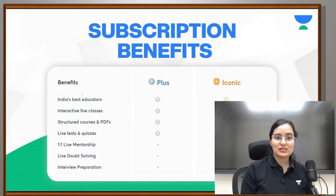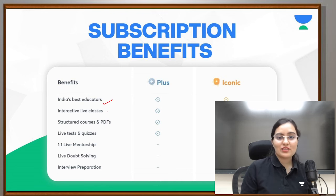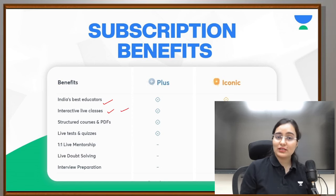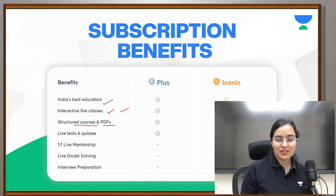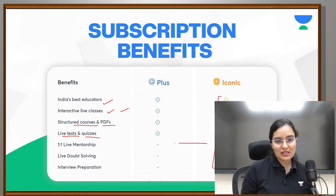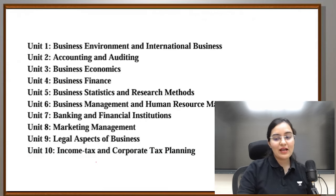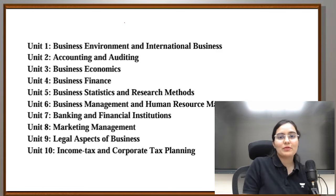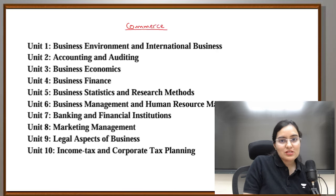The subscription benefits include preparing with India's best educators, live classes, recorded classes, structured courses, PDFs, and full combined PDFs for revision. There are live tests and quizzes also. If you take Iconic subscription, you will also get live mentorship, live doubt solving, and interview preparation. Now let's talk about commerce since my paper 2 is commerce — which are the most important and most scoring units in commerce?